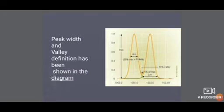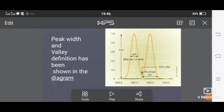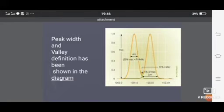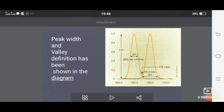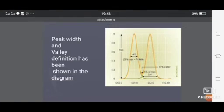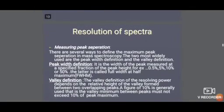This diagram shows peak width and valley definition. You can see in the diagram that two peaks are present, and there is a difference between them. The gap between the two overlapping peaks is called the valley — here it is labeled as the 10% valley. The peak width is also defined in this diagram.